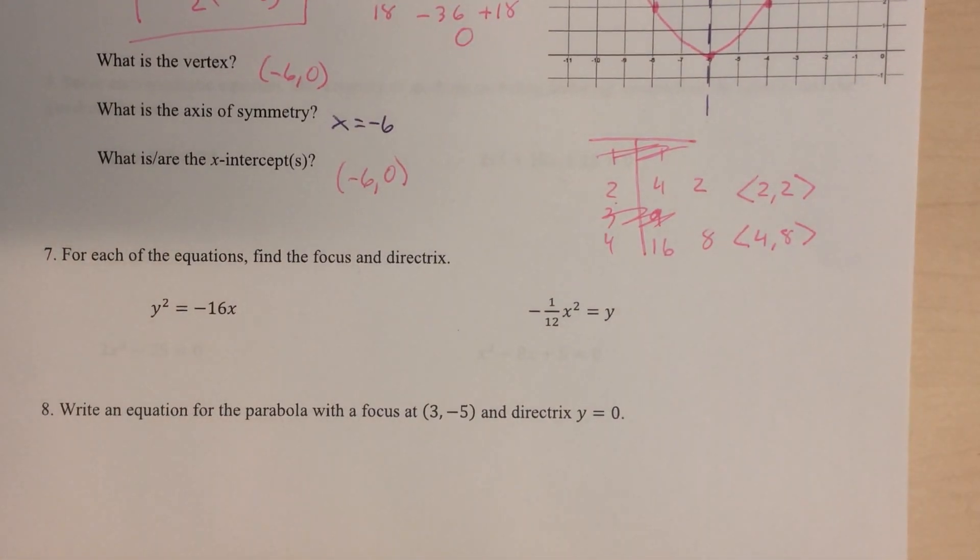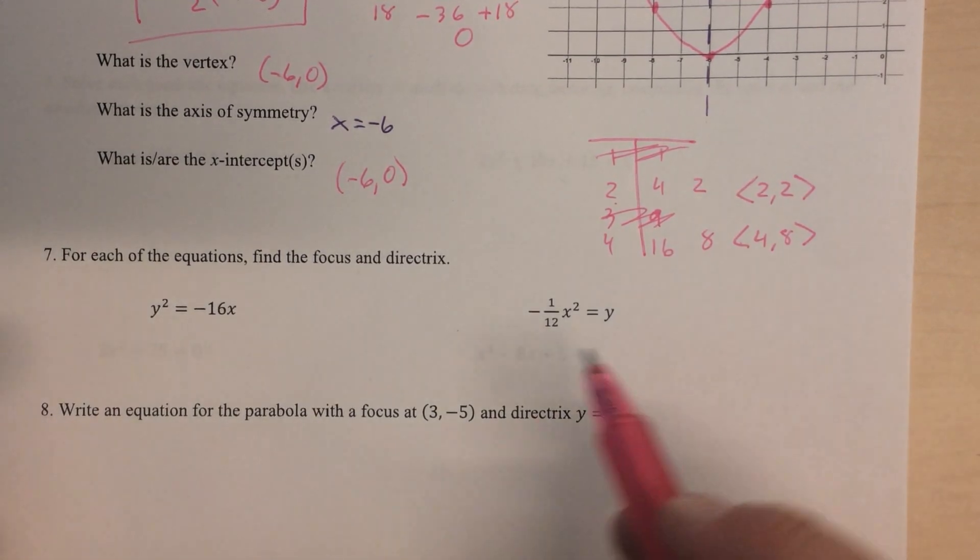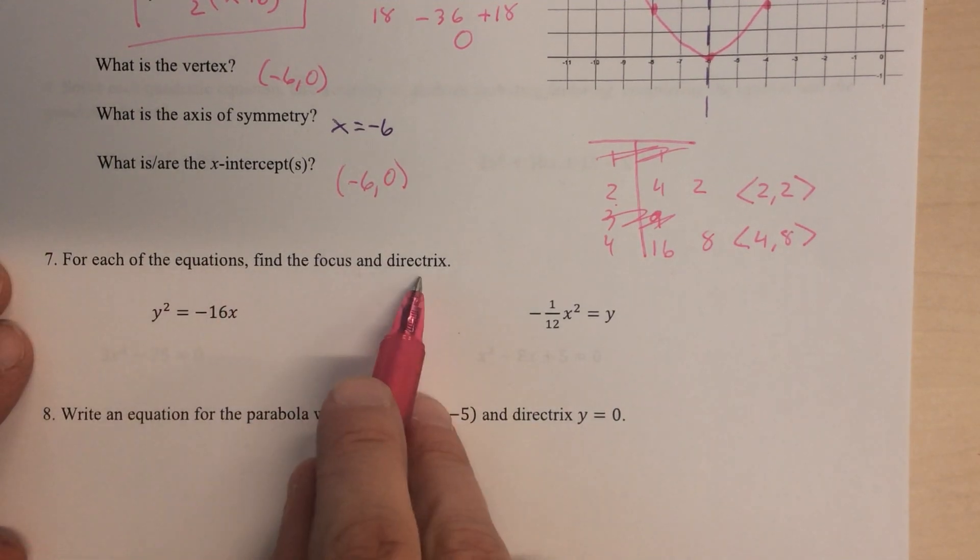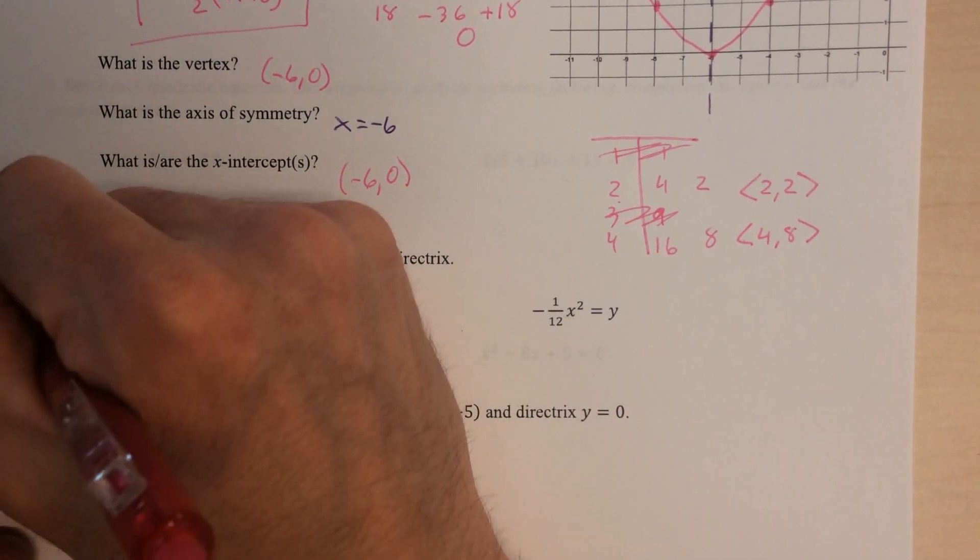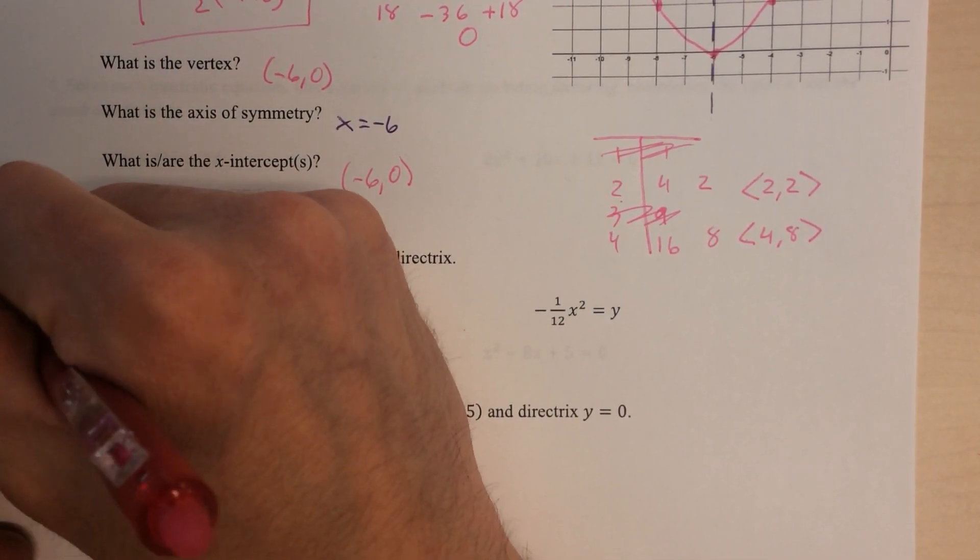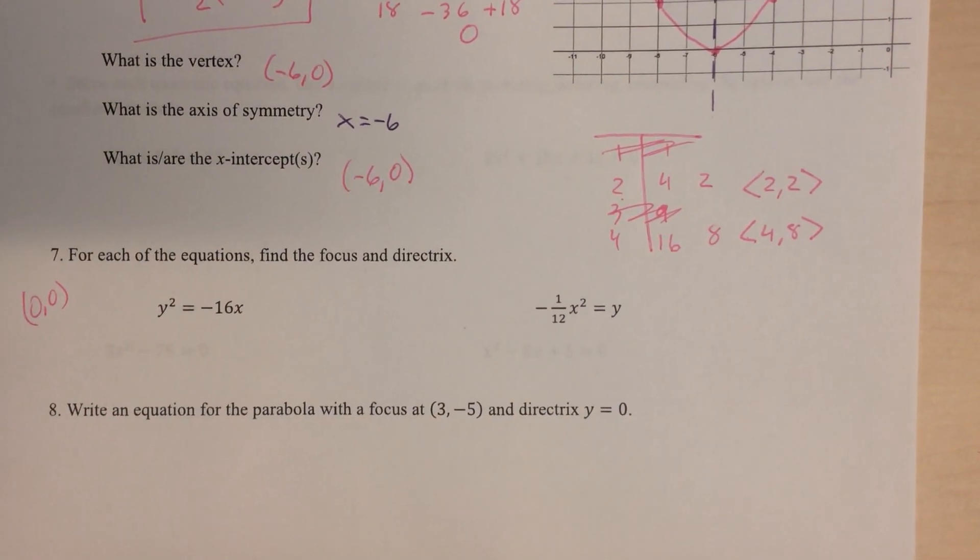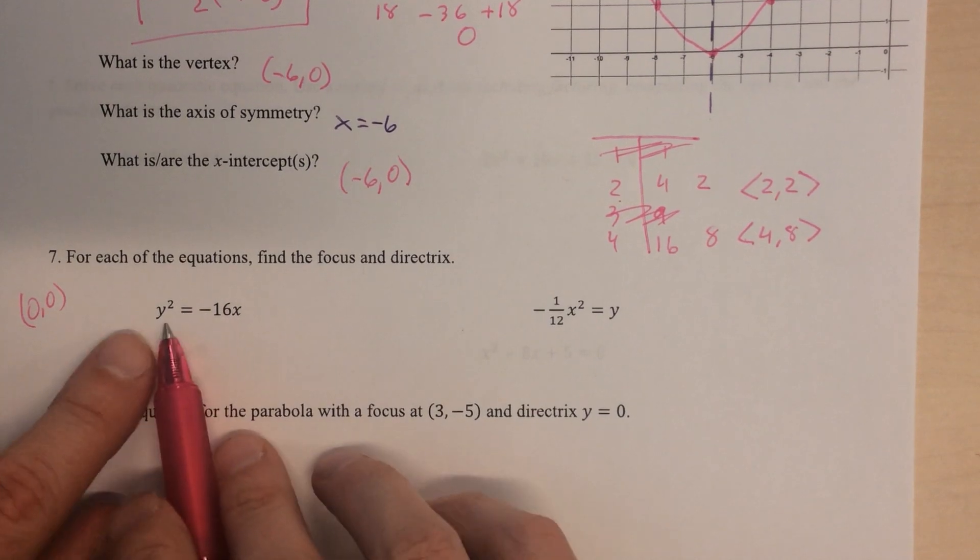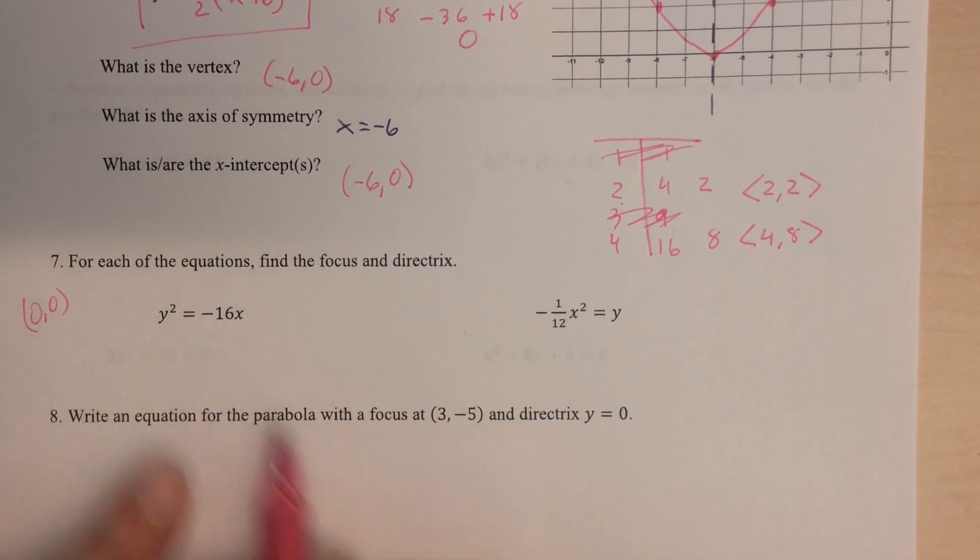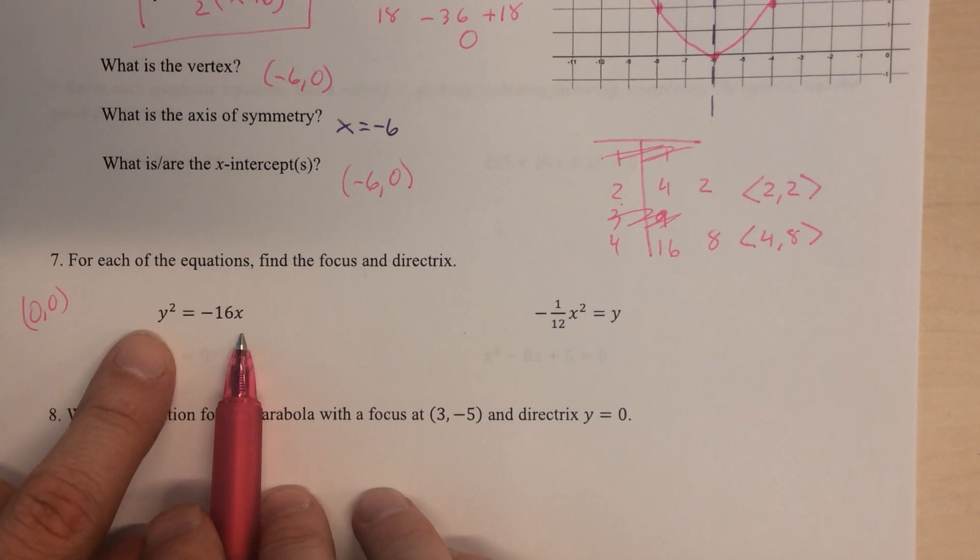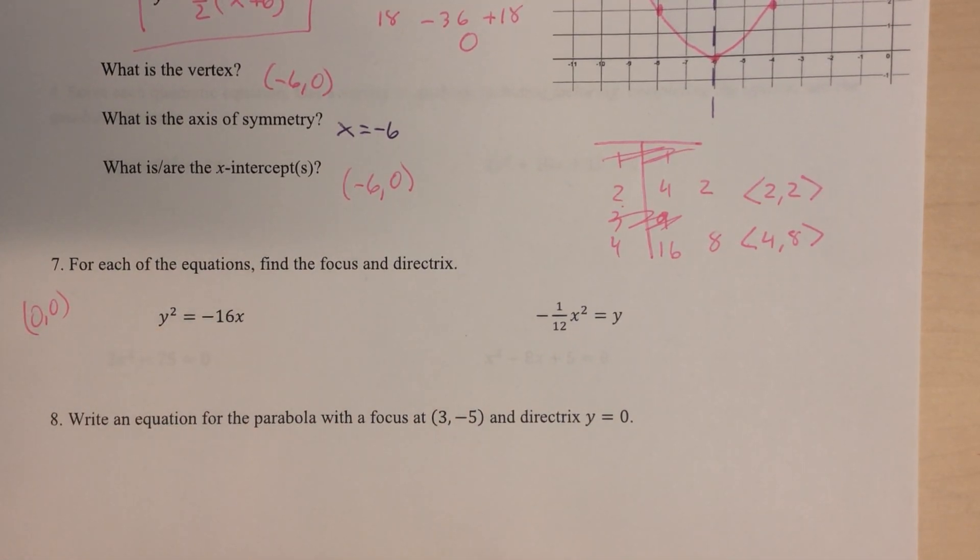All right. Number seven. Seven and eight, we're going to look at the focus and directrix type problems. For seven, these are problems, these equations, even though it doesn't say it in the text here, these are equations that will be located at the origin. So the vertex is going to be at zero, zero. There's no shifting that's happening in the y and the x. None that's happening. That's going to happen in eight. So all these are at the origin.